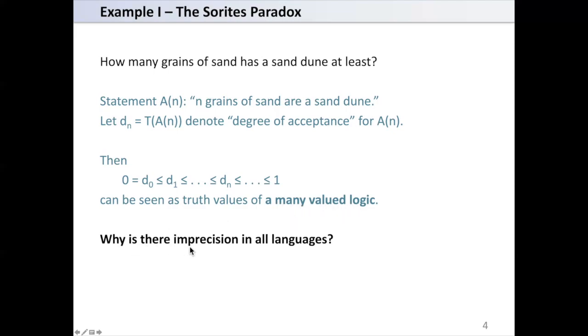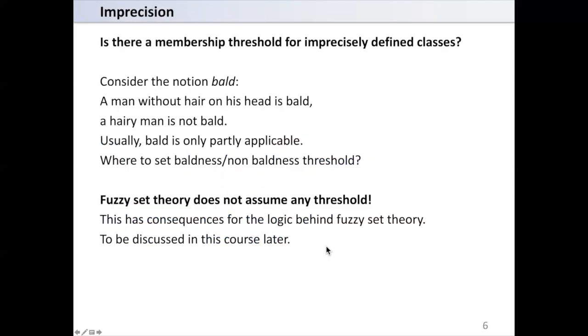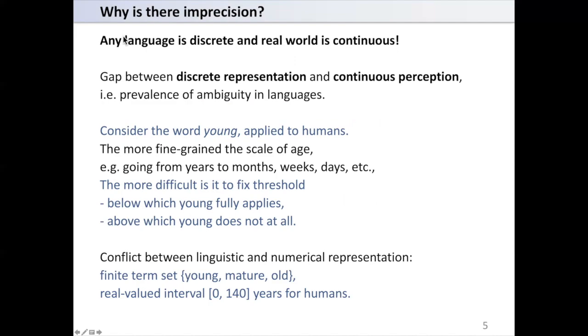Why is there imprecision in all languages? The reason is that any language is discrete and the real world is continuous. There is a gap between discrete representation in the language and continuous perception, that is, prevalence of ambiguity in languages.